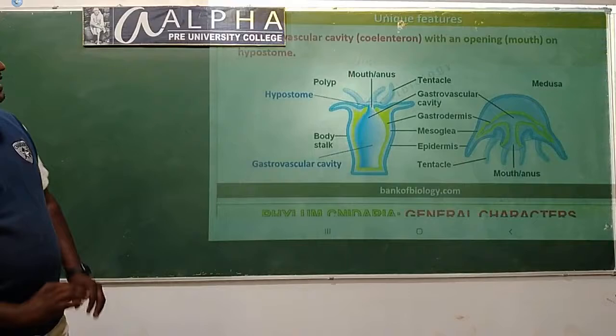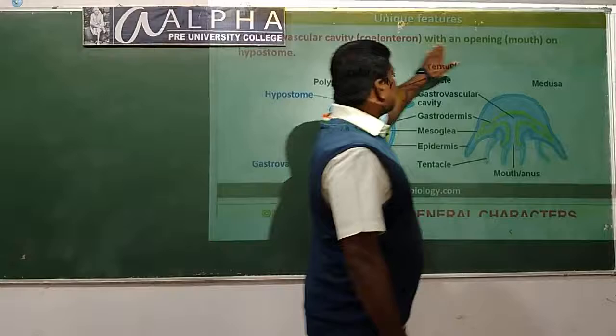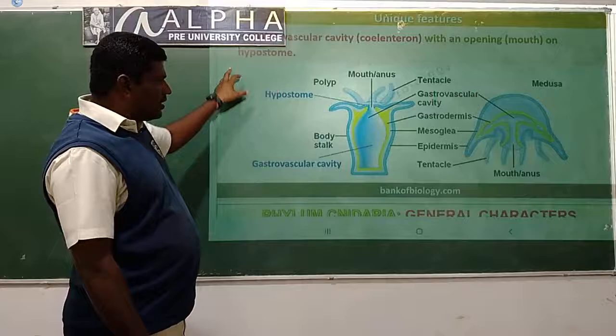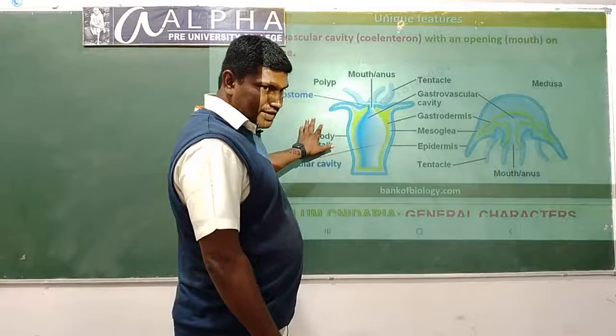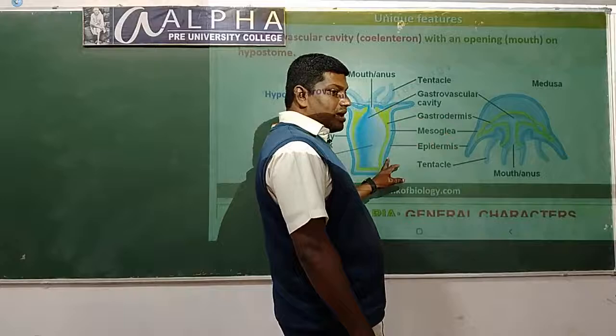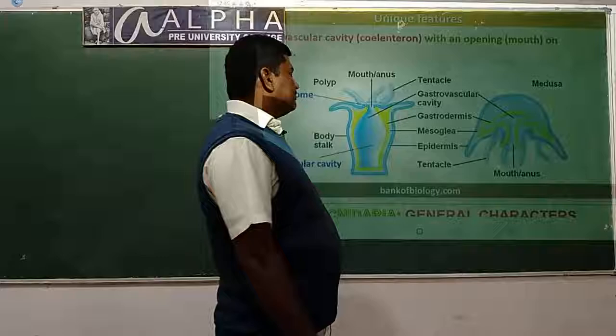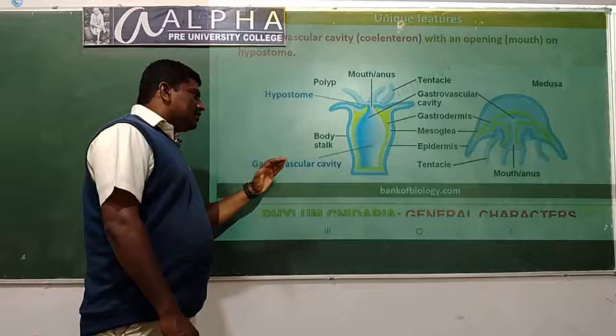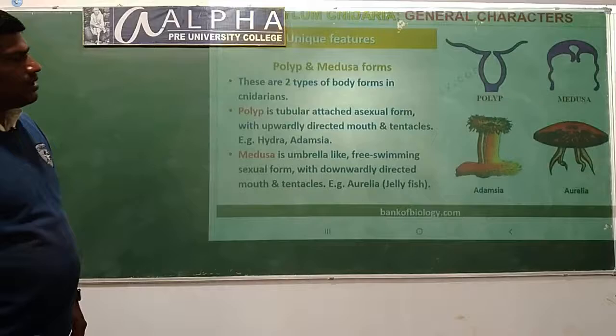A gastrovascular cavity called the coelenteron with an opening or mouth called the hypostome. Looking at the diagram of a Hydra: the hypostome, mouth, tentacles, gastrovascular cavity, gastrodermis, mesoglia. Diploblastic animals have two germ layers with a jelly-like substance called mesoglia in between them. This is the body structure - this is about the features of Hydra.